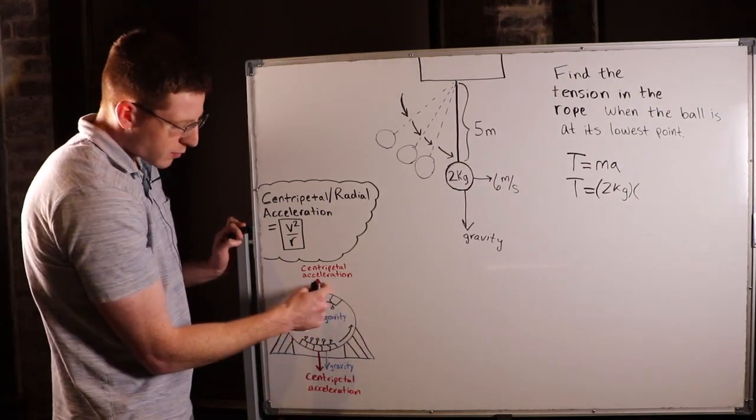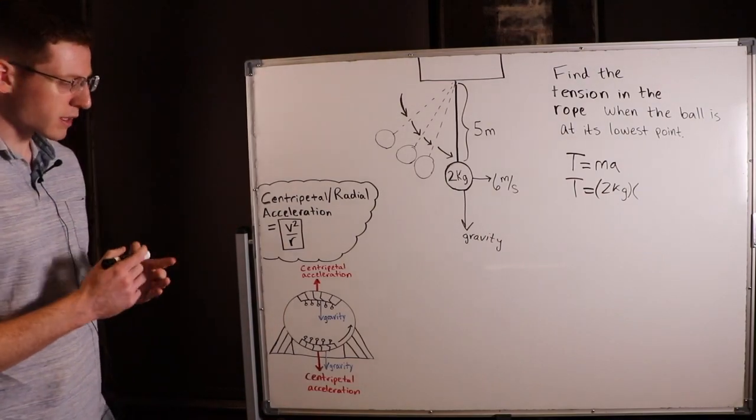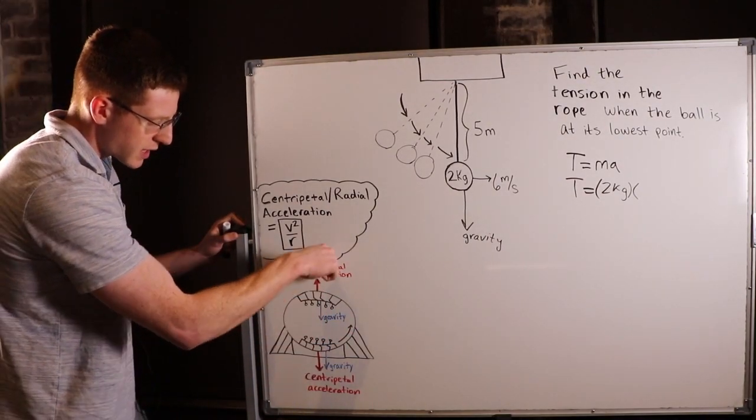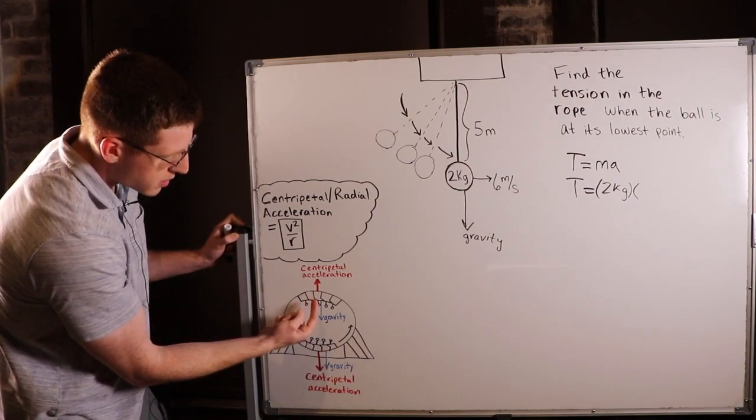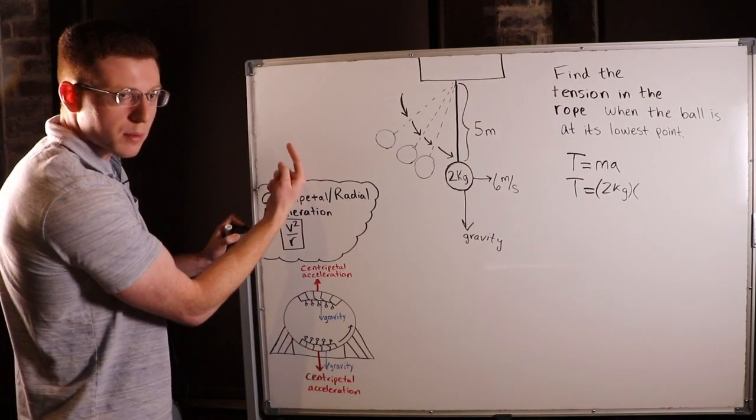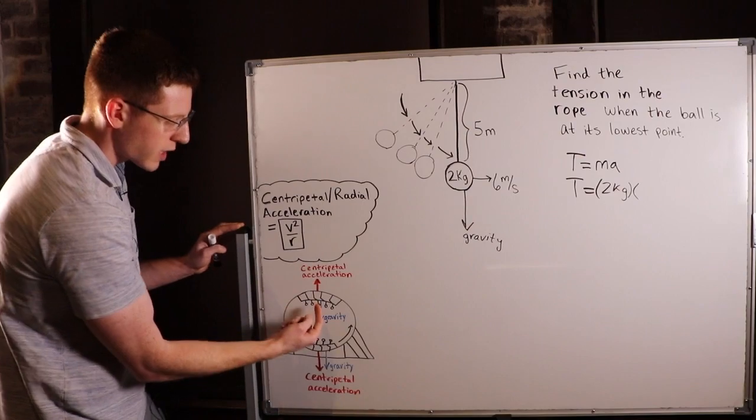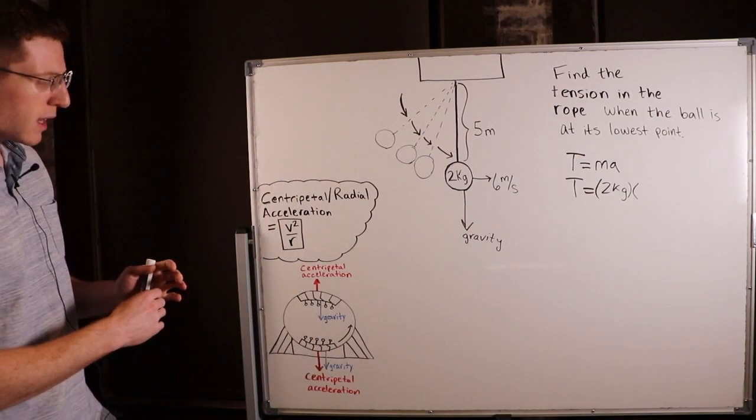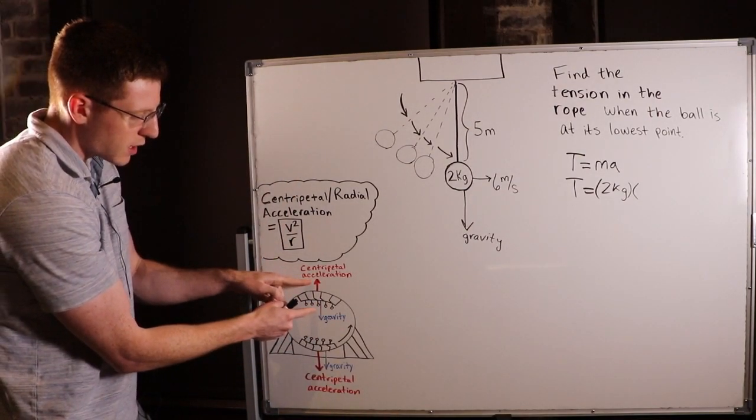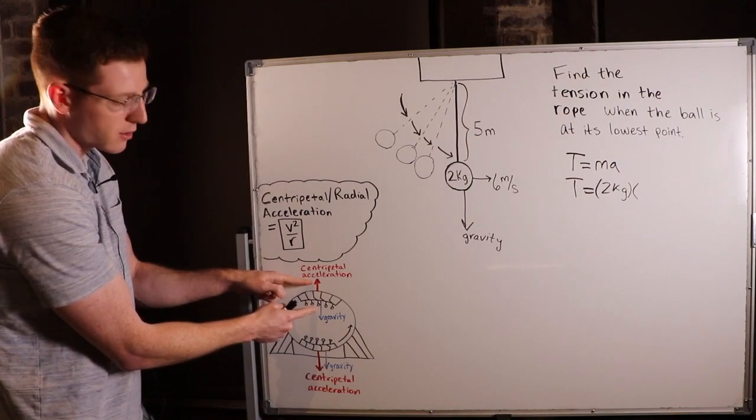And when you get to the top of a roller coaster loop, you feel nearly weightless. And this is because, again, gravity is acting straight down, but this time centripetal acceleration is acting straight up because it always acts directly out of the circle. And at this point, centripetal acceleration and gravity oppose each other. They almost cancel each other out. And that's why you feel weightless.